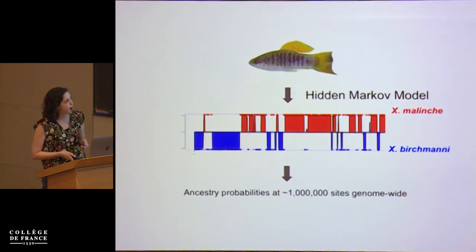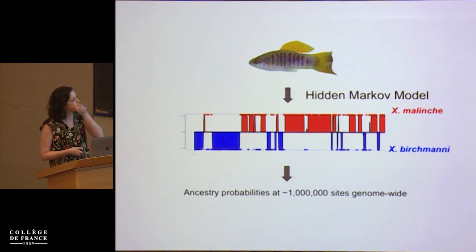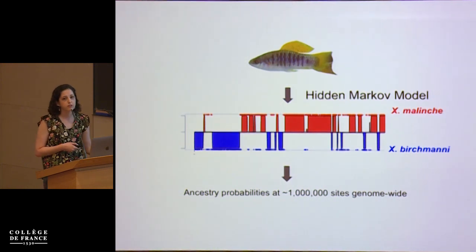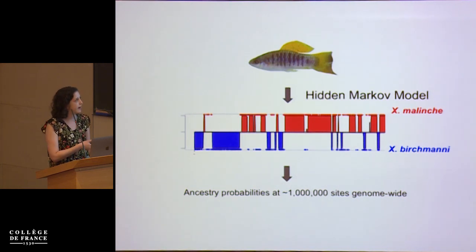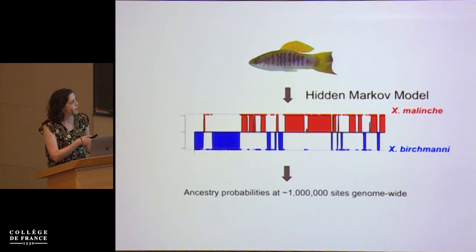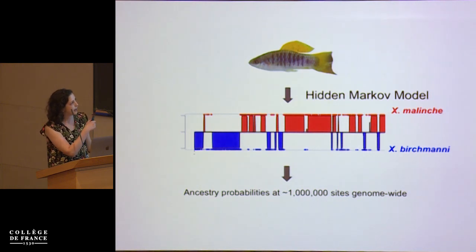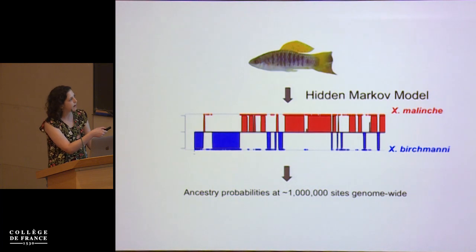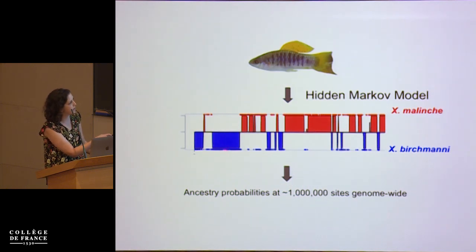A lot of the data we use to study these populations is local ancestry data, which Jenny gave a really nice introduction to. The basic approach is we collect a fin clip from a natural hybrid, extract DNA, and sequence to about one-X whole genome coverage. We map those reads to both the malinche and birchmanii parental genomes and make a table of counts of reads at ancestry informative markers that are fixed differences between the species. We then apply a hidden Markov model to locally infer tracks derived from each parental species, giving us chunks of birchmanii ancestry, malinche ancestry, and regions heterozygous in ancestry.